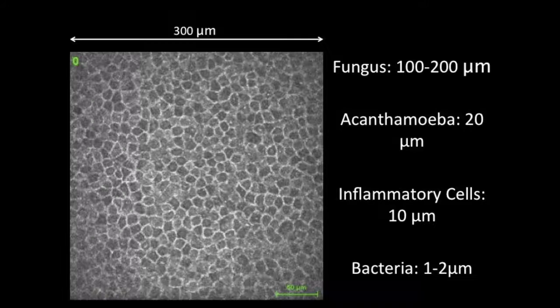Each confocal photograph is 300 x 300 microns in dimension, and whenever we try to identify anything in a confocal photograph, it's important to look at the relative size in comparison to the photo.